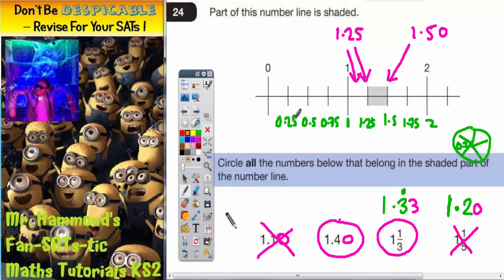Another way of thinking of it is that 1.4 would be a bit less than 1.5, so 1.4 would be about here. And 1.3, if you imagine this gap here split into three equal pieces.